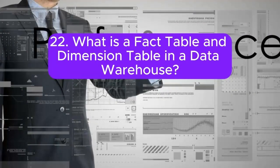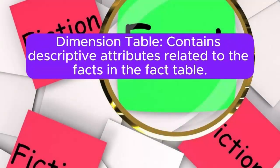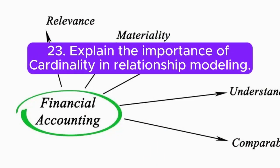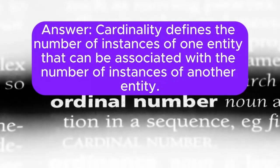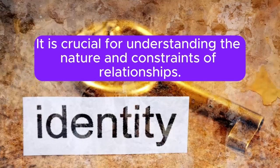22. What is a fact table and dimension table in a data warehouse? Answer: A fact table contains quantitative data, while a dimension table contains descriptive attributes related to the facts in the fact table. 23. Explain the importance of cardinality in relationship modeling. Answer: Cardinality defines the number of instances of one entity that can be associated with the number of instances of another entity. It is crucial for understanding the nature and constraints of relationships.